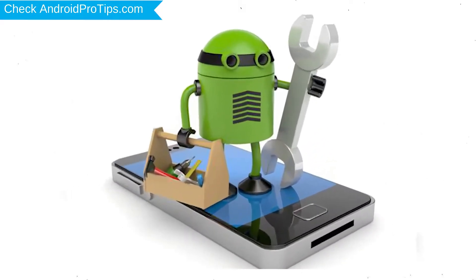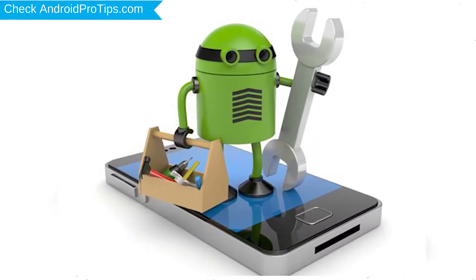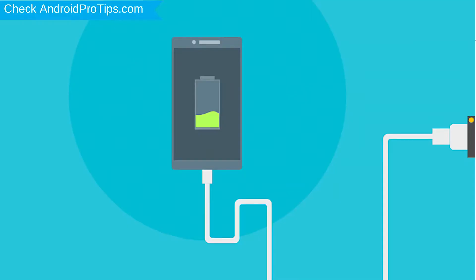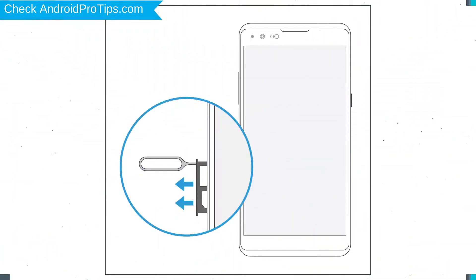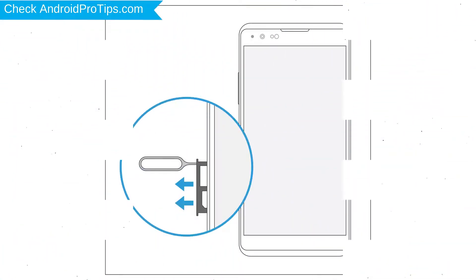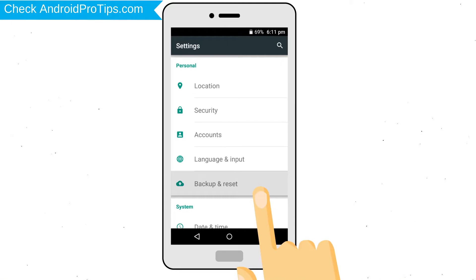Before resetting your mobile, your battery must be above 50%. Remove SD cards and SIMs. Back up your Android mobile data if possible.